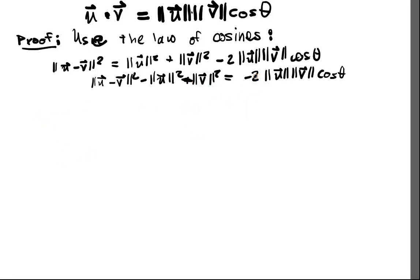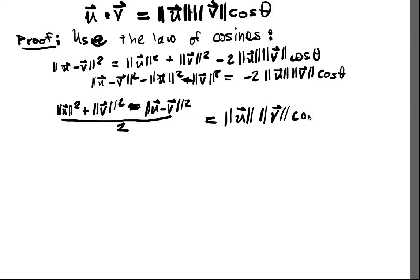Great. So now we get rid of this negative 2, and when we divide both sides by negative 2, what do we end up with? On this side, we're going to end up with the magnitude of u squared plus the magnitude of v squared minus now, so we multiply it by negative, the magnitude of u minus v squared, all over 2.